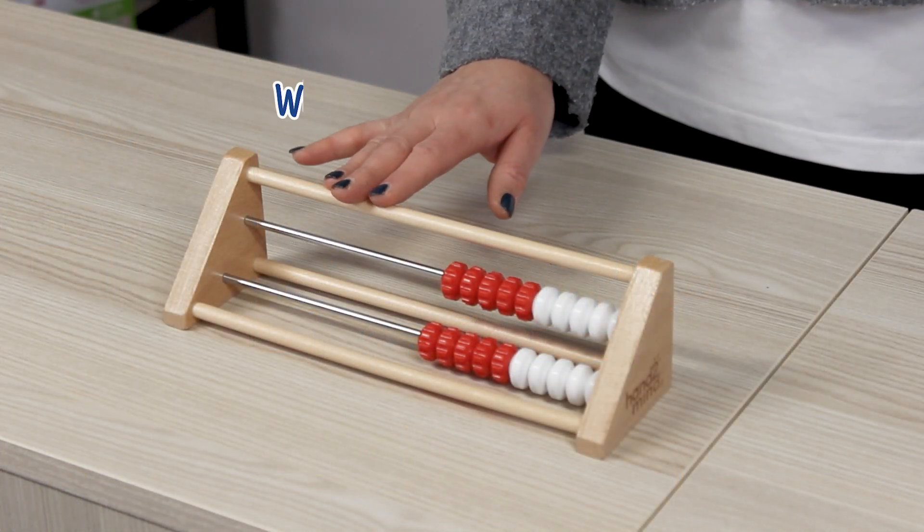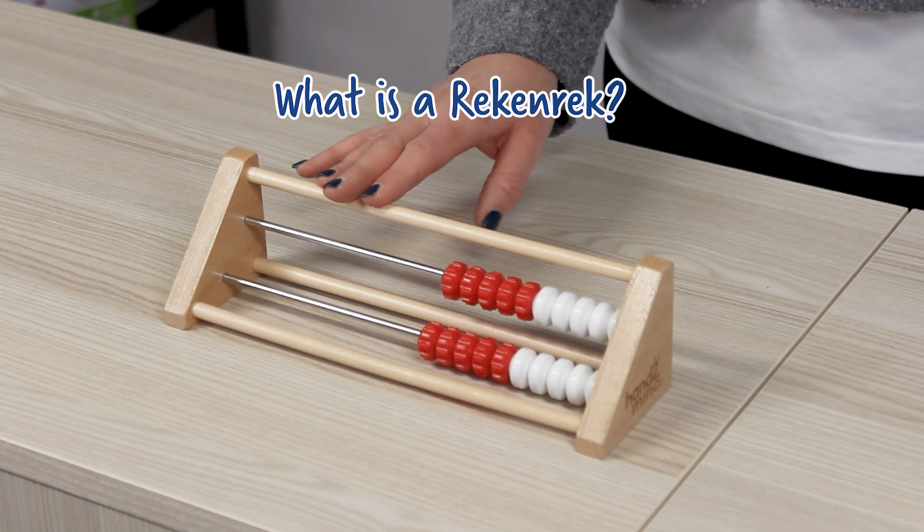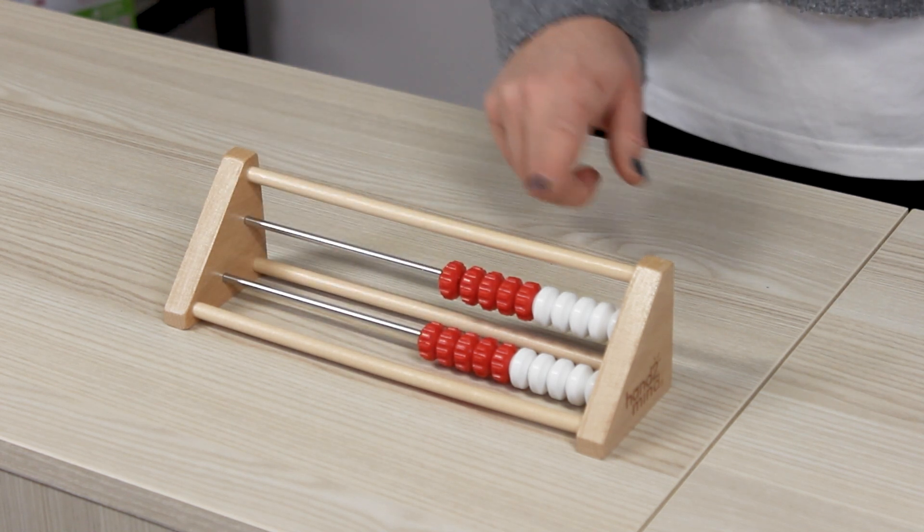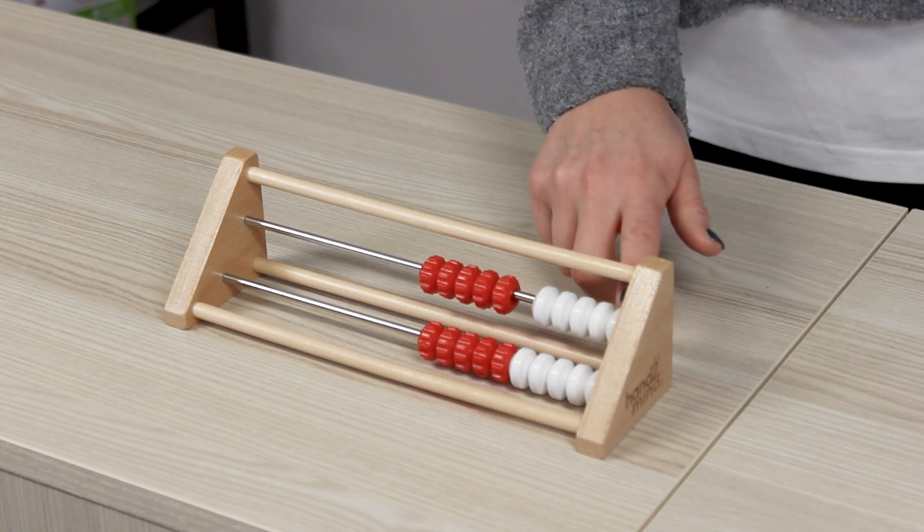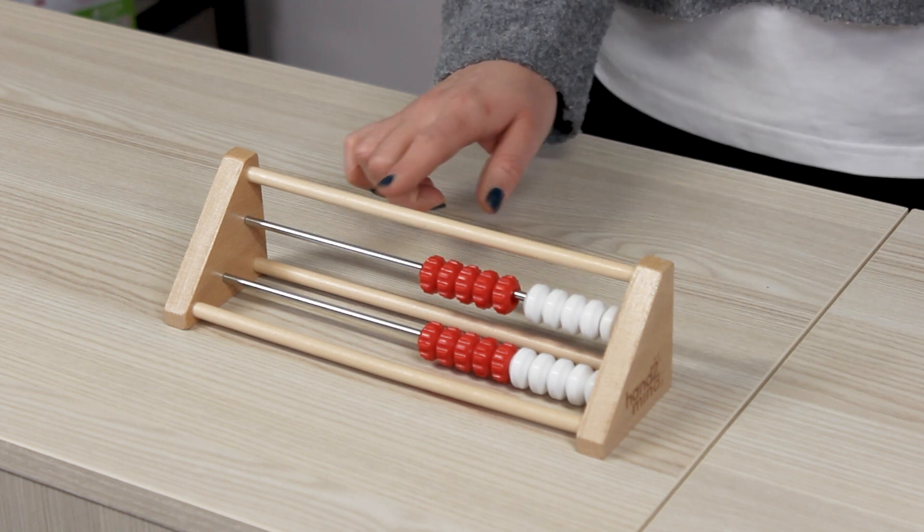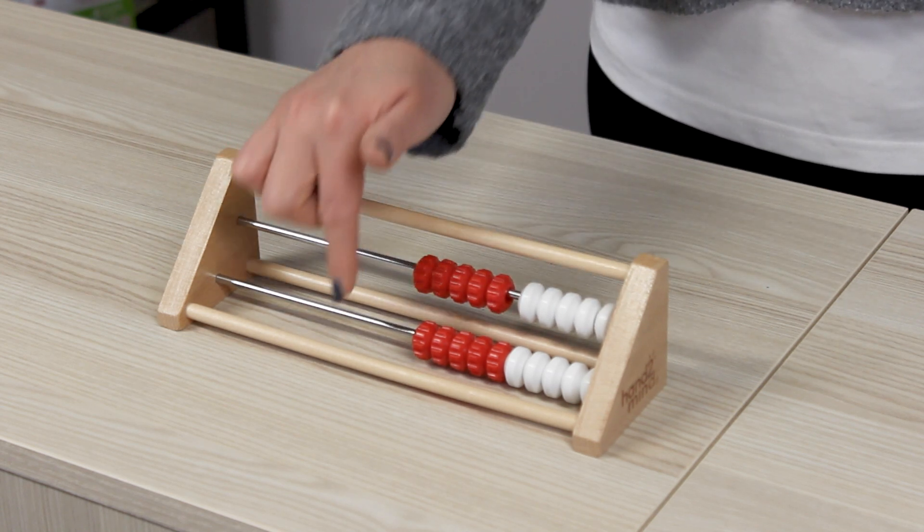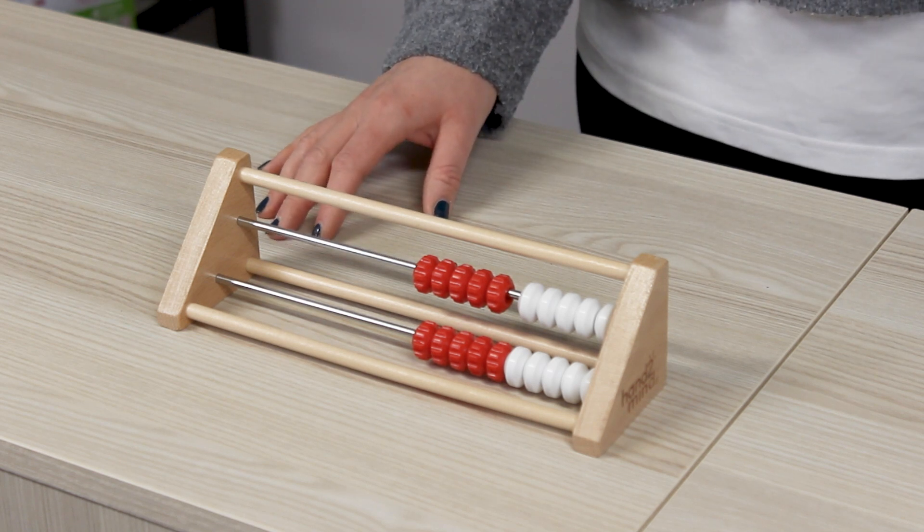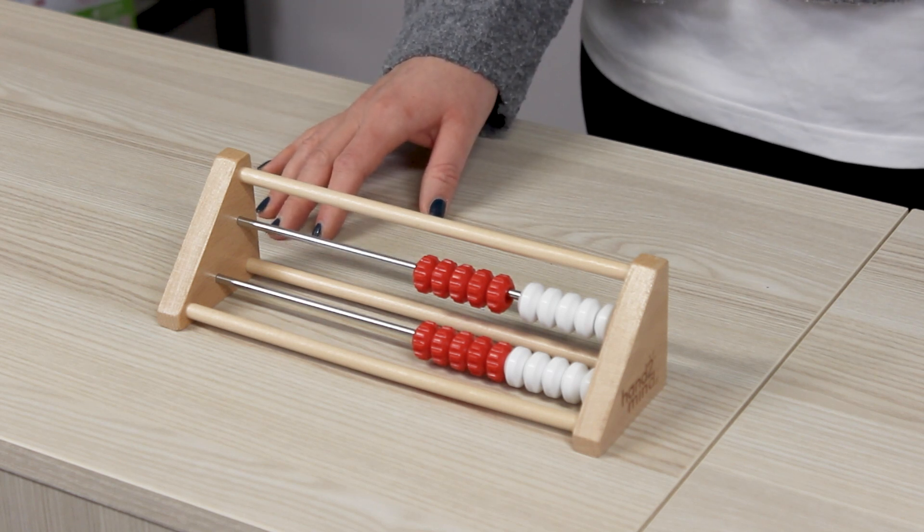So what is a Rekenrek? The Rekenrek is essentially a counting frame with two rows of ten beads split into five red and five white beads. The colour contrast helps children to visualise numbers, spot patterns and develop a sense of grouping which is critical for mental maths.